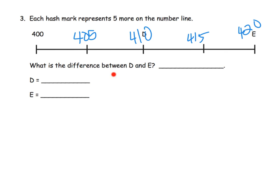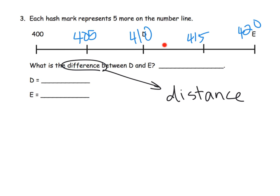What is the difference between D and E? Notice — difference and distance are very similar. Going from 410 to 420, the difference is 10. So D is 410 and E is 420.